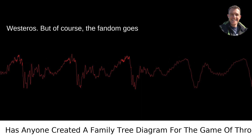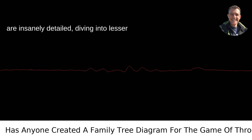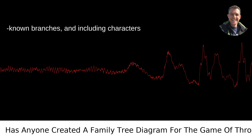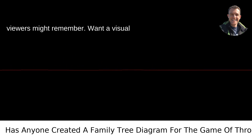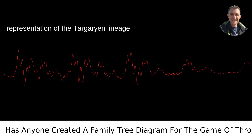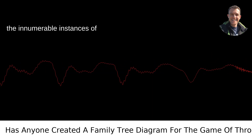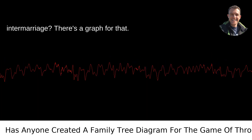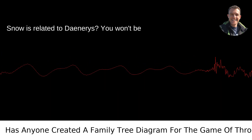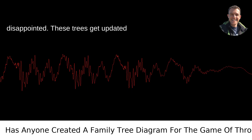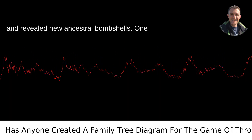But of course, the fandom goes steps further. Some family trees out there are insanely detailed, diving into lesser-known branches, and including characters that only the most eagle-eyed readers or viewers might remember. Want a visual representation of the Targaryen lineage that resembles a spider's web, thanks to the innumerable instances of intermarriage? There's a graph for that. Hoping to get a clearer picture of how Jon Snow is related to Daenerys? You won't be disappointed. These trees get updated regularly, as the series progressed and revealed new ancestral bombshells.